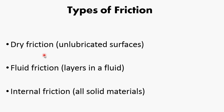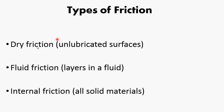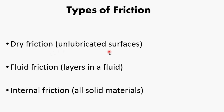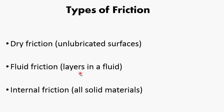We have three main types of friction. Dry friction occurs between un-lubricated surfaces. Fluid friction occurs between the moving layers in a fluid. The last one, internal friction, occurs in all solid materials.